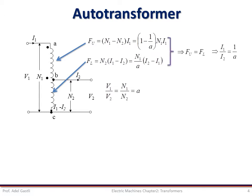For ampere turn balance from the upper and lower parts of the winding, we can write that FU equal FL, which leads to I1 over I2 equal to 1 over the turns ratio A. These equations indicate that, viewed from the terminals of the autotransformer, the voltages and currents are related by the same turns ratio as we have seen in the two-windings transformer.